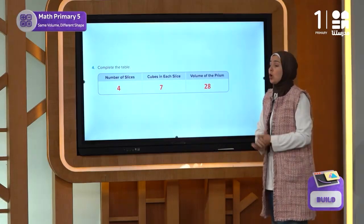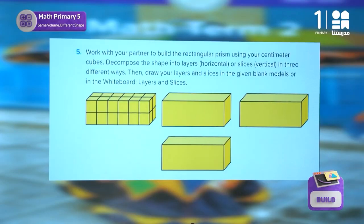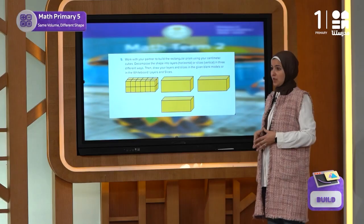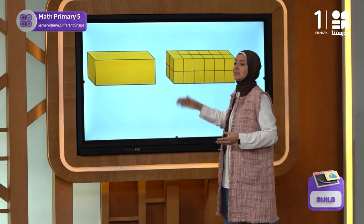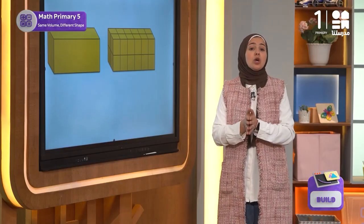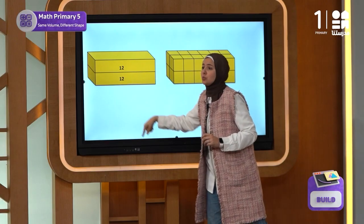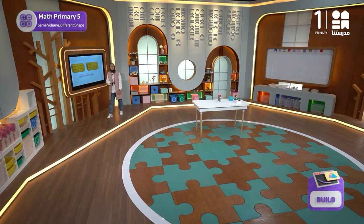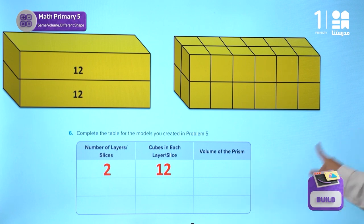Now let's think of problem five. We want to decompose the shape into layers or slices in three different ways. This is the rectangular prism we have given. We can decompose it horizontally into layers or vertical slices. The first way: if we draw a horizontal line and decompose it into two layers, now the figure will be composed of two layers. Each layer has 12 cubes — six are visible in front, and six are behind them. The number of layers is two, the number of cubes in each layer is 12, and the volume of the rectangular prism is 24 cubic centimeters.